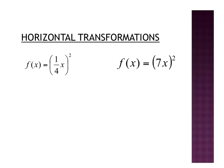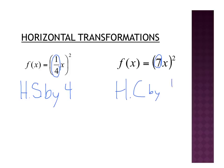Let's try a couple of examples. Here I have f(x) = (1/4 x)². That 1/4 inside the part being squared causes a horizontal transformation. Thinking opposite, I flip 1/4 to get 4, so I have a horizontal stretch by a factor of 4. In the next example, I have a 7 inside — it's horizontal. Flipping it gives 1/7, so I have a horizontal compression by 1/7.